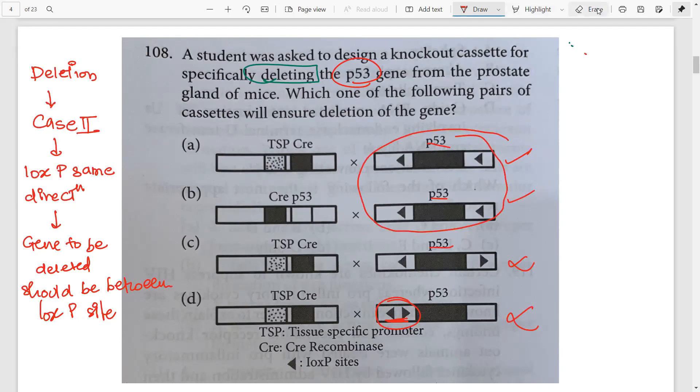These two are in the same direction, which is what we want. Opposite direction means p53 will be inverted. Now this is slightly confusing because in both cases the orientation of p53 and LOXP sites is correct. You will have to look at the other half given.